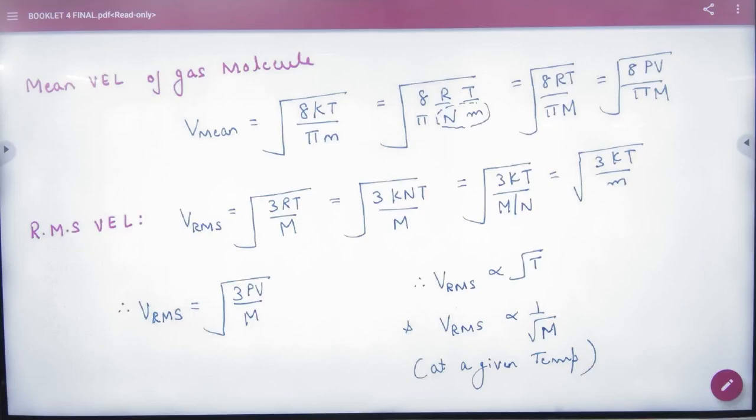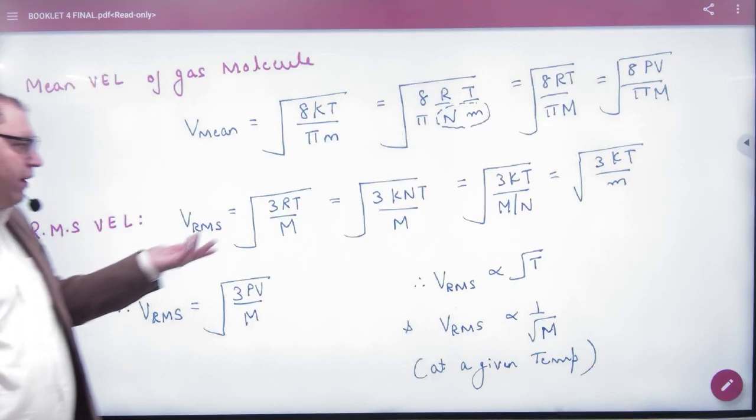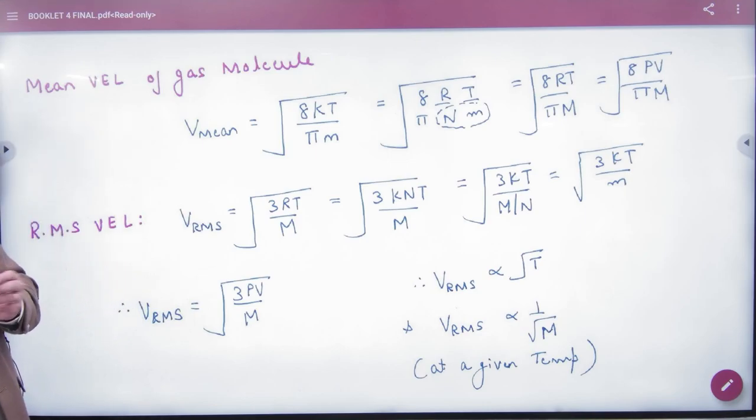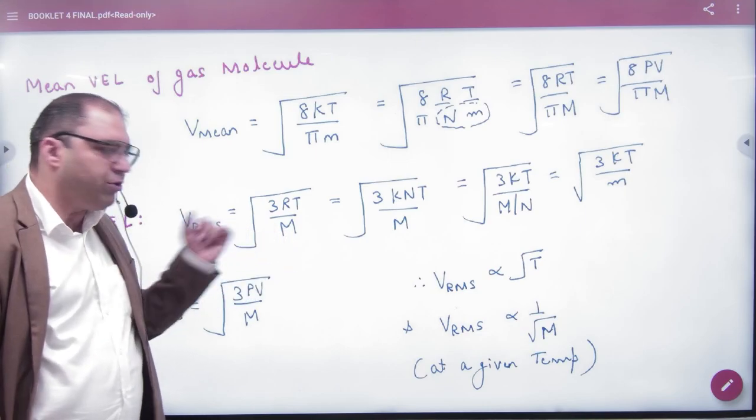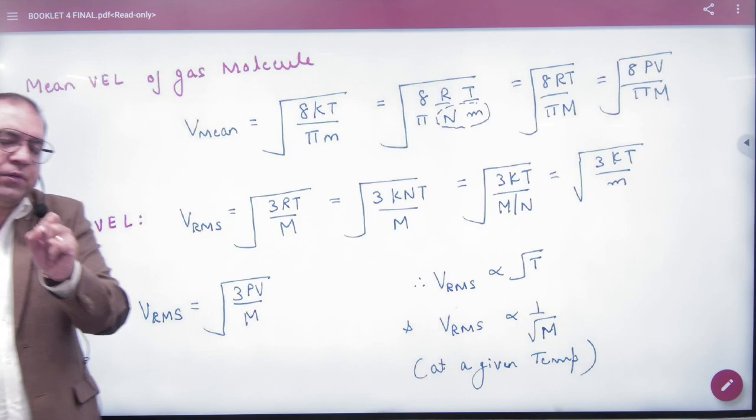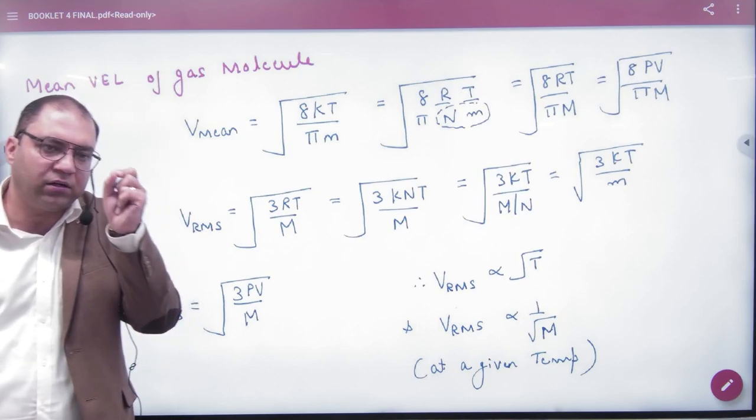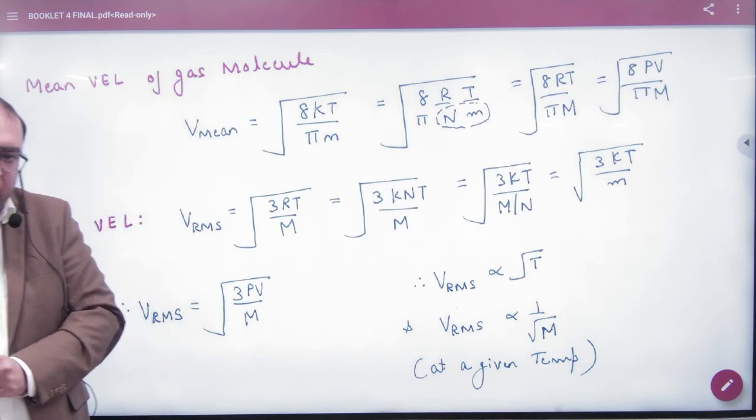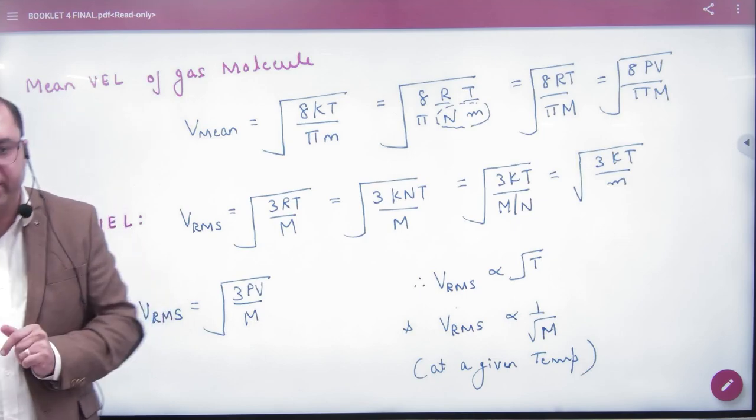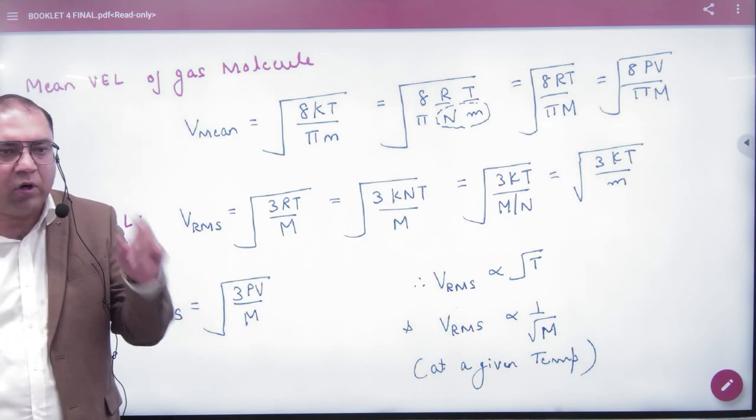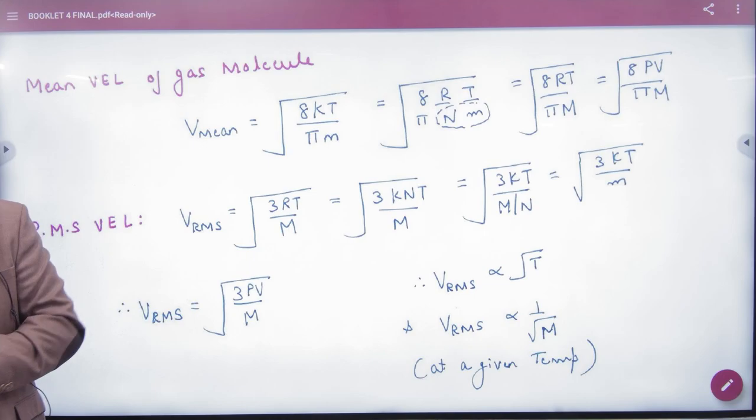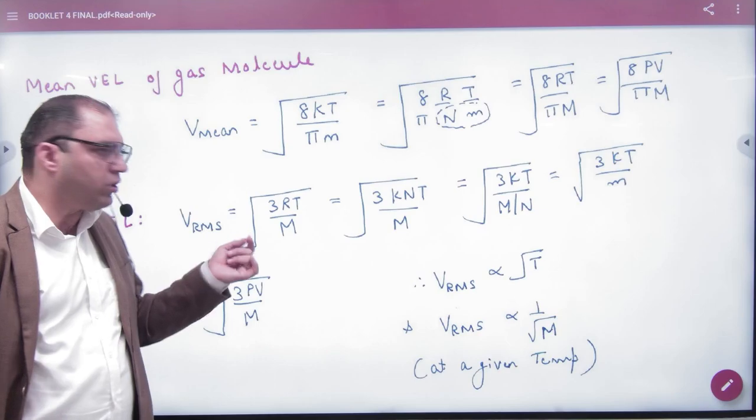So last time, we used the RMS value of this molecule with capital M. I told you that the most confusing part of numerical problems is determining which mass to use. We have to focus on which mass. When talking about RMS, we have to use M for molecular mass.